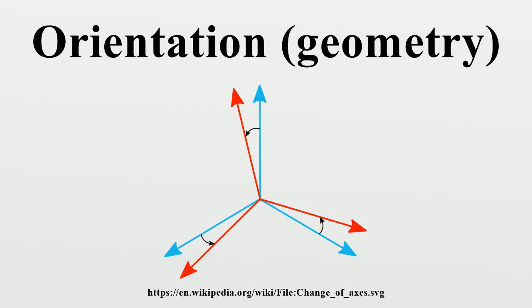In two dimensions the orientation of any object is given by a single value, the angle through which it has rotated. There is only one degree of freedom and only one fixed point about which the rotation takes place.